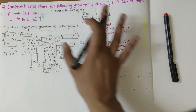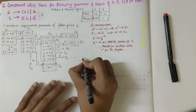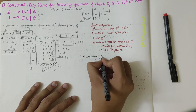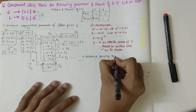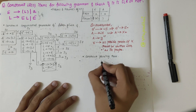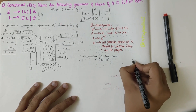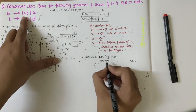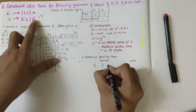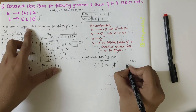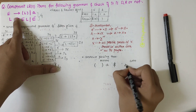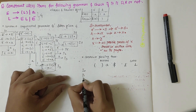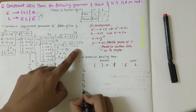My next step is to construct the parsing table with action and goto parts. Action would comprise all the terminals: open bracket, close bracket, A, and dollar. Whereas goto would have the non-terminals E and L. I will take all the possible productions from I0 through I7.